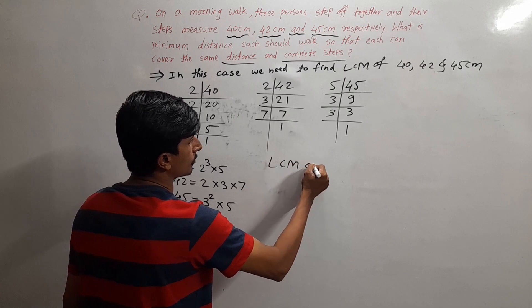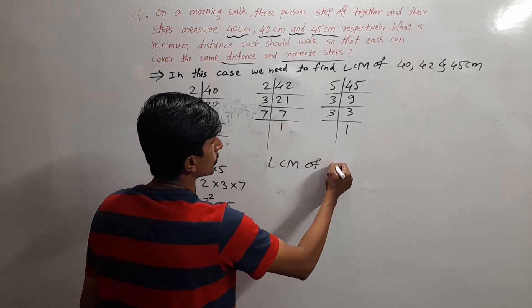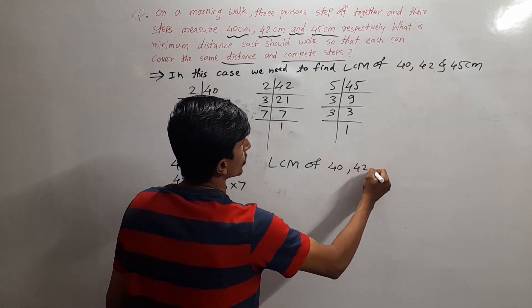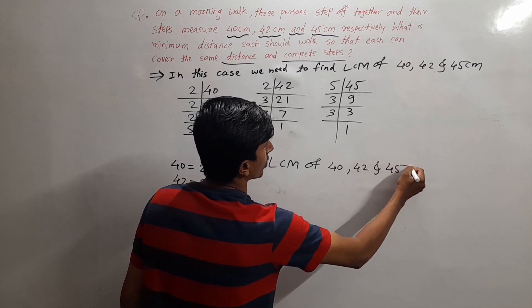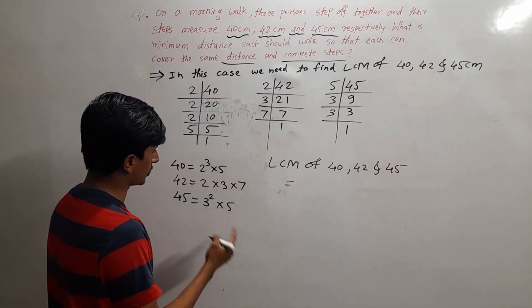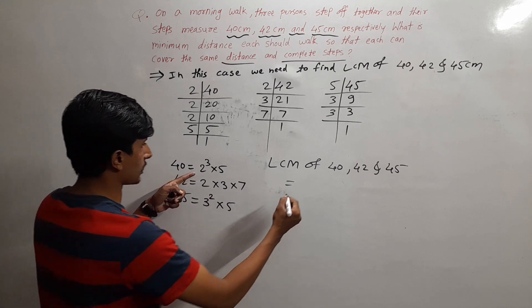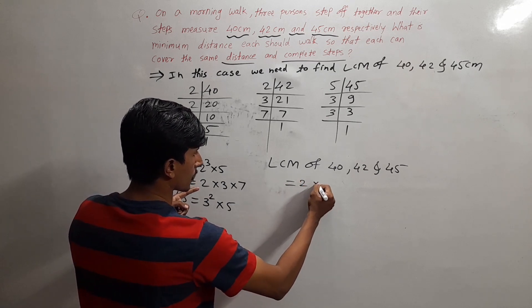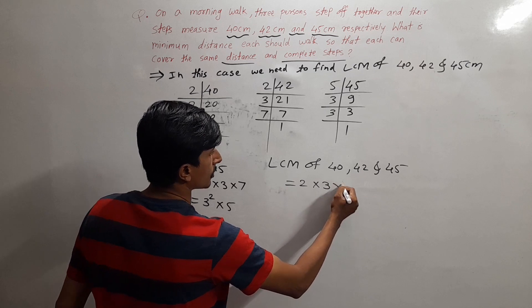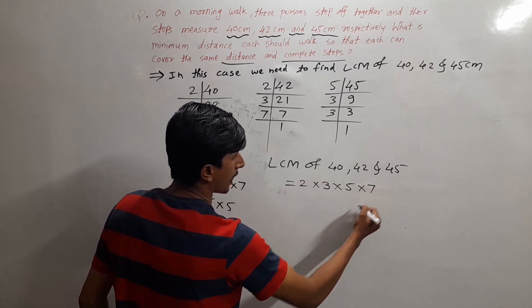We need to find the LCM of all these three numbers: 40, 42, and 45. Take all the prime factors from the list: 2, 3, 5, and 7.